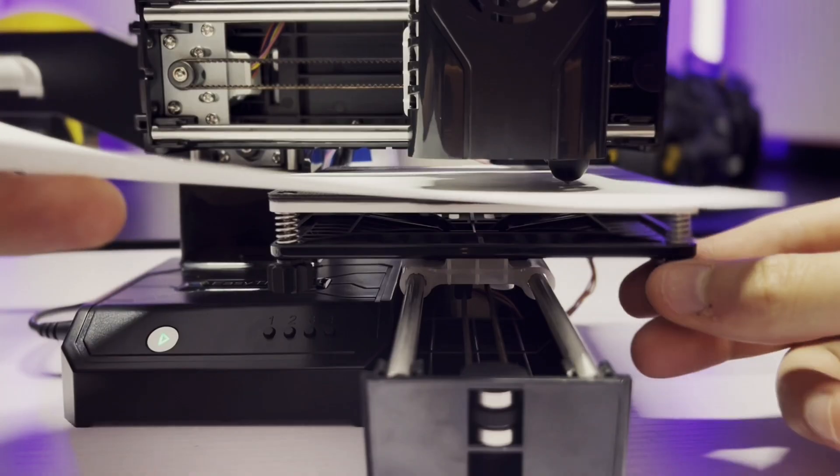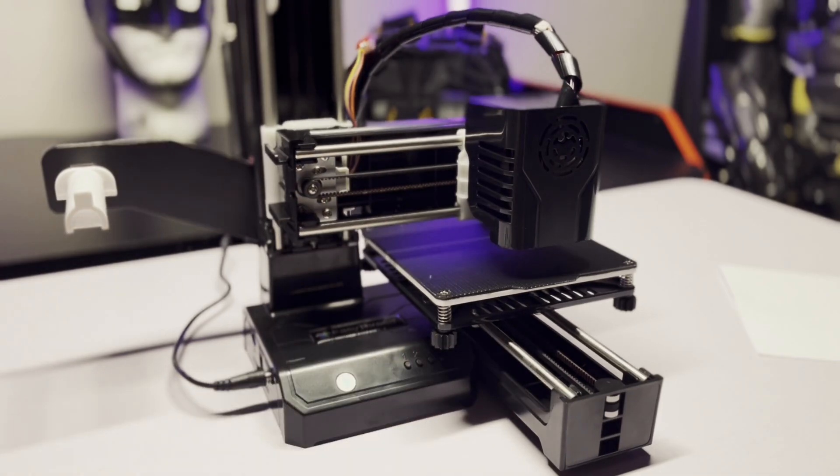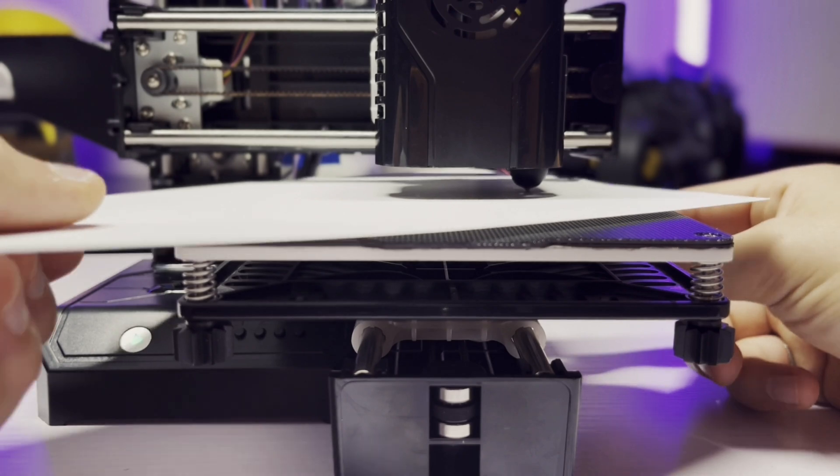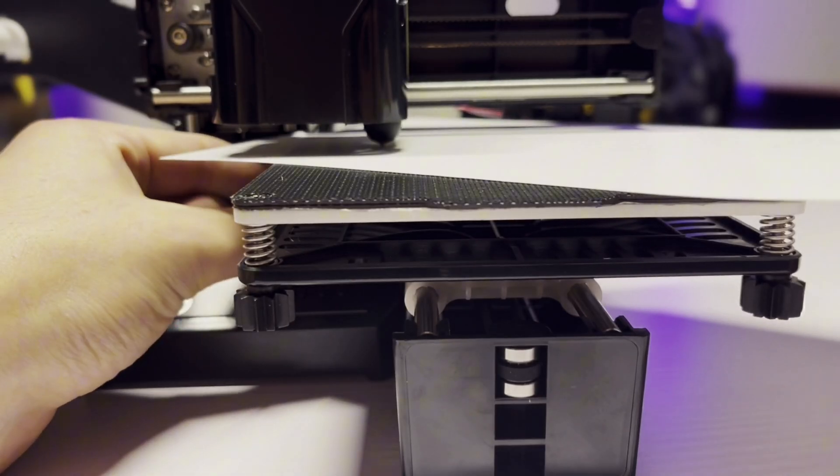I go through positions two, three, and four on the printer bed and repeat this process. I go to each of these positions at least three times to make sure that everything is perfectly level. Now that the printer bed is level, I'm going to load in some filament.